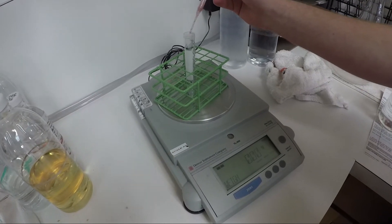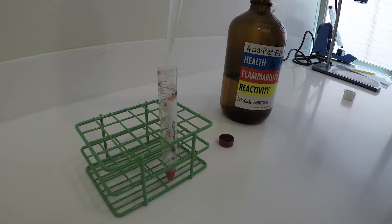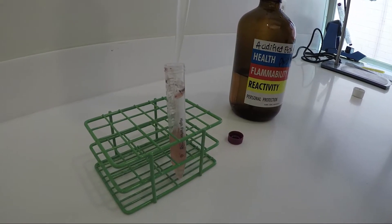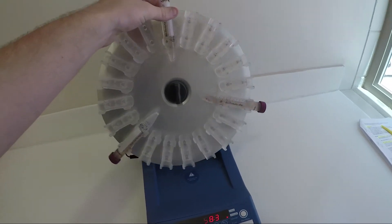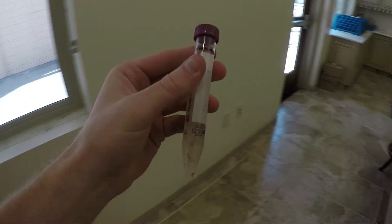Weigh one gram of homogenate into a centrifuge tube. Add 10 mils of acidified ethanol. We'll undergo a one hour extraction while mixing. If you don't have the budget for a loopster, you can also entertain a co-worker.